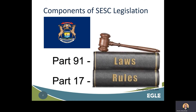EGLE implemented Part 91 legislation with the development of rules for a Unified Soil Erosion and Sedimentation Control Program. The legislation sets up the framework and the agency sets rules that provide additional information about the requirements for implementation. Part 91 of the NREPA is the law, formerly known as Act 347 of 1972. The Part 17 rules are administrative rules authored by governmental departments or agencies spelling out how the law will be carried out. Both are enforceable and can be found in the appendix at the end of the unit in the manual.